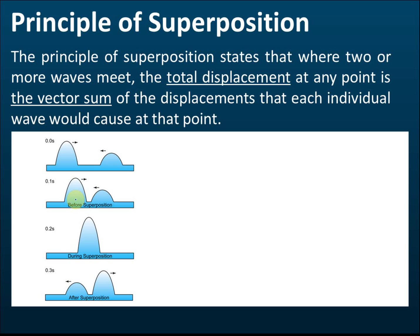This is before superposition. The amplitude of the first wave is 2 cm and the amplitude of the second wave is 1 cm. At 0.2 seconds these two waves meet — superposition occurs — and according to the principle of superposition, the amplitude of the resultant wave is equal to the vector sum of the amplitudes of these two waves: 2 cm plus 1 cm, giving a vector sum of 3 cm.